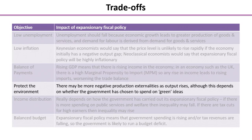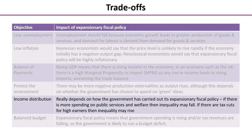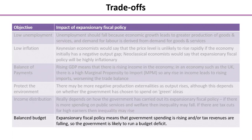Looking at the impact on the environment, there could be more negative production externalities as output rises, although this could depend on whether the government has chosen to spend on green initiatives as part of its expansion. Regarding income distribution, this really depends on how the government has carried out its expansionary fiscal policy — if there is more spending on public services and welfare then inequality might fall, but if it's achieved by tax cuts for high earners then inequality might rise.